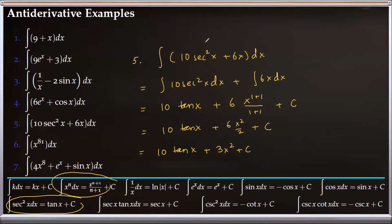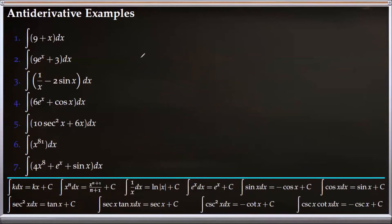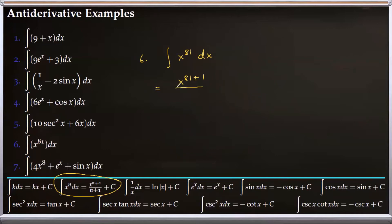For number six, we find the antiderivative of x to the 81. Using the power rule formula with n equals 81, we get x^(81+1) over (81+1) plus C, which simplifies to x^82 over 82 plus C.